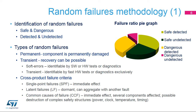For quantification purposes, safety standards recognize a safe failure fraction and diagnostic coverage. The safe failure fraction, or SFF, is the ratio of the rate of safe failures, including the rate of detected dangerous failures, to the total failure rate — safe failures as well as detected and undetected dangerous failures. The diagnostic coverage, or DC, is the ratio of the probability of detected dangerous failures to the probability of all the dangerous failures.